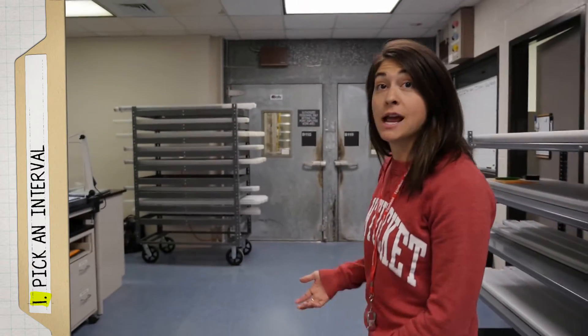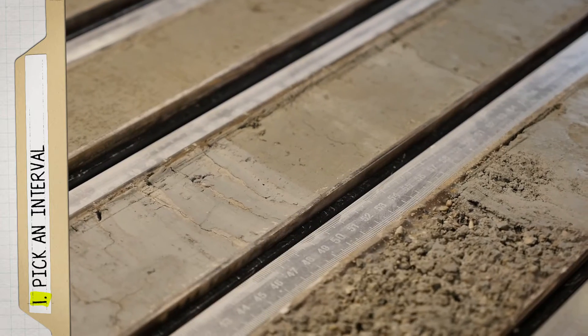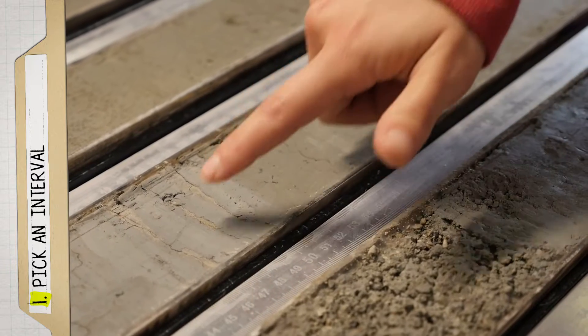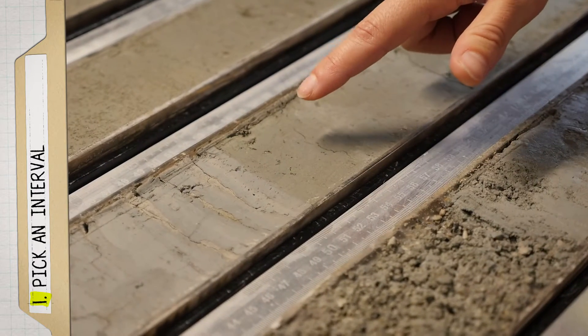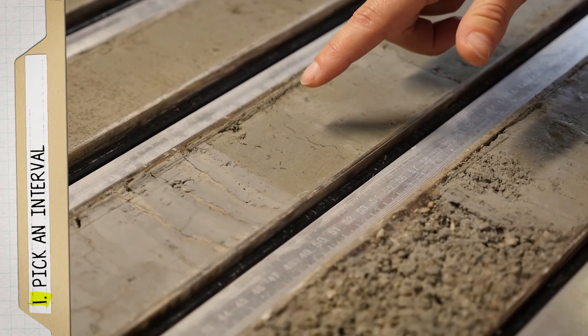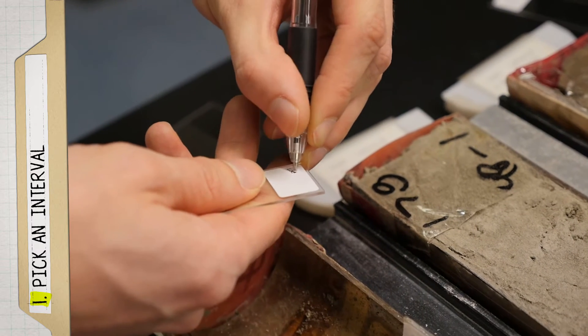So the first step to making a smear slide is deciding what exactly you want to look at. So for example, in this core, we see a color change and a texture change across a sharp boundary. So we might want to take a smear slide on either side to determine the composition.